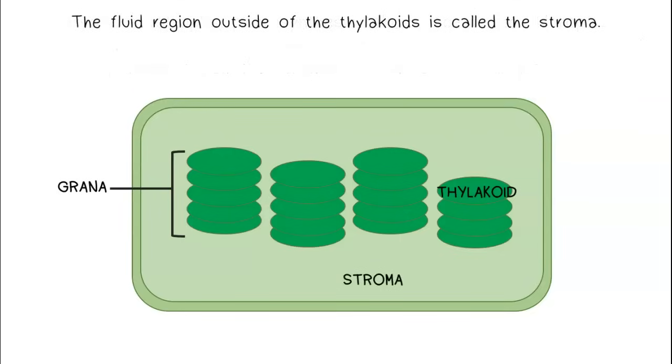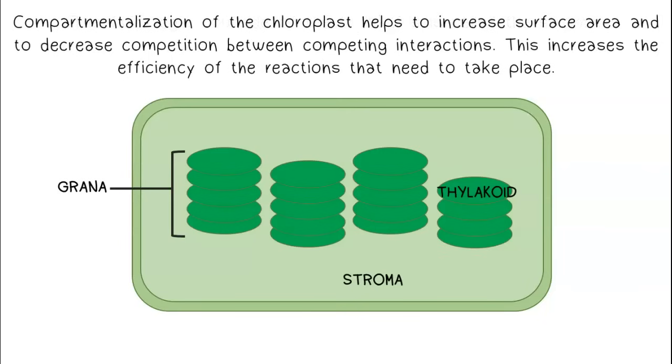The fluid region outside of the thylakoids is called the stroma. Compartmentalization of the chloroplast helps to increase surface area and to decrease competition between competing interactions. This increases the efficiency of the reactions that need to take place.